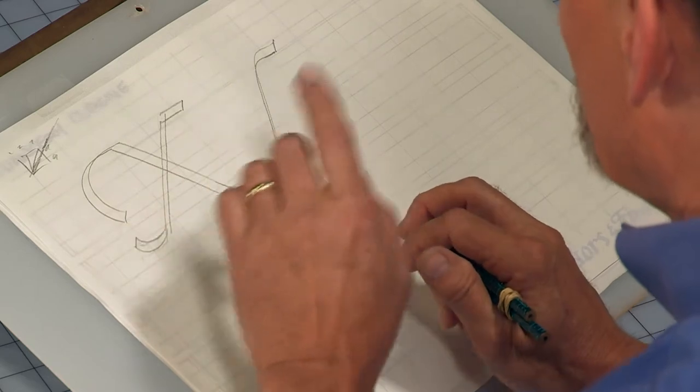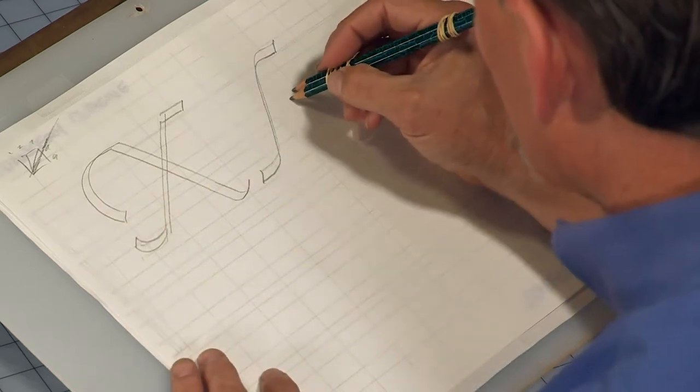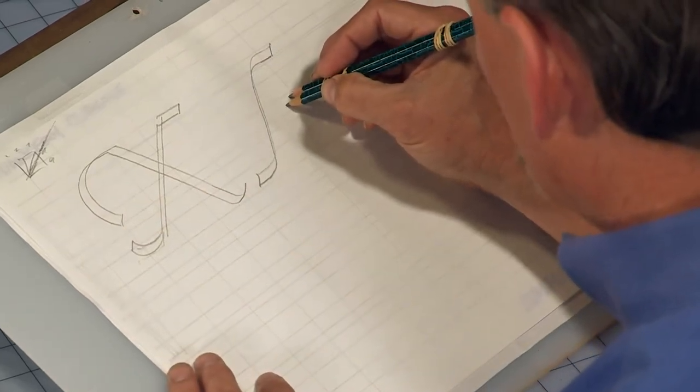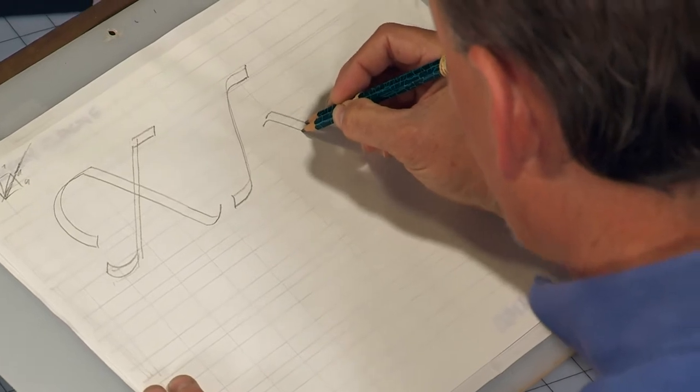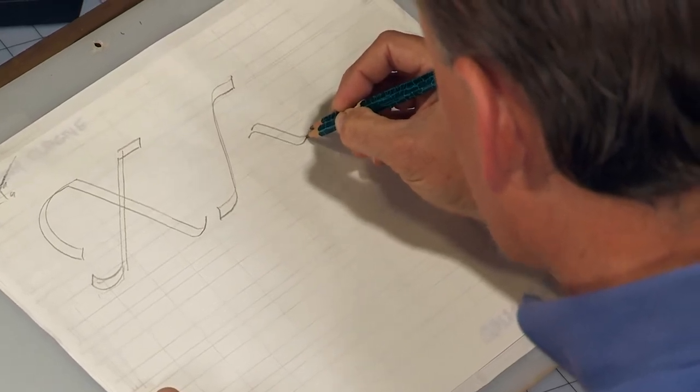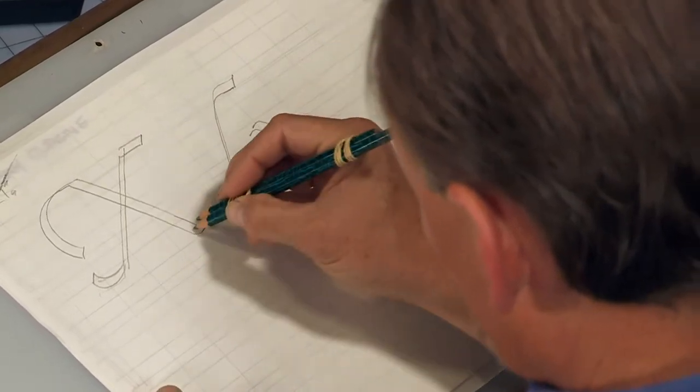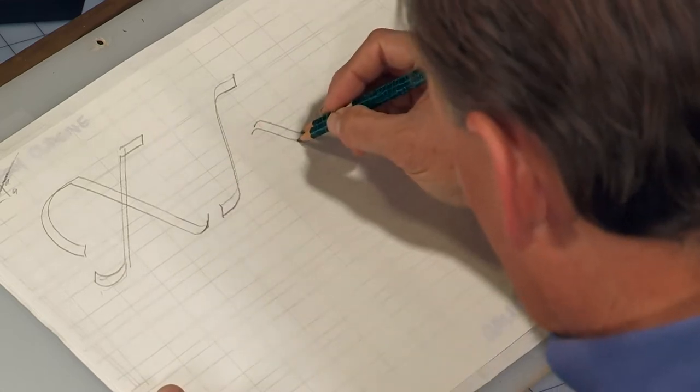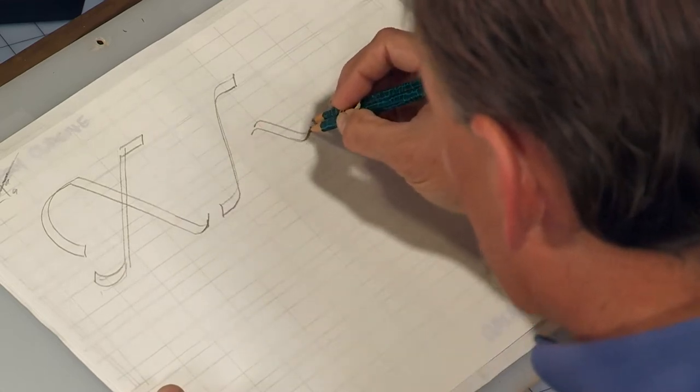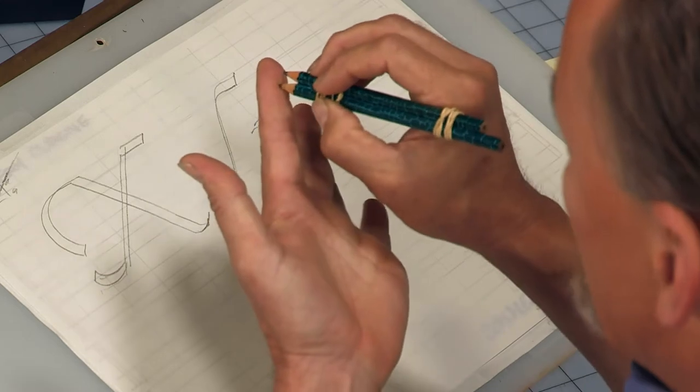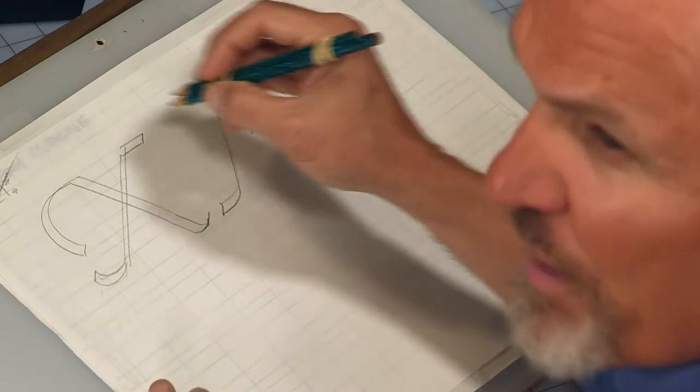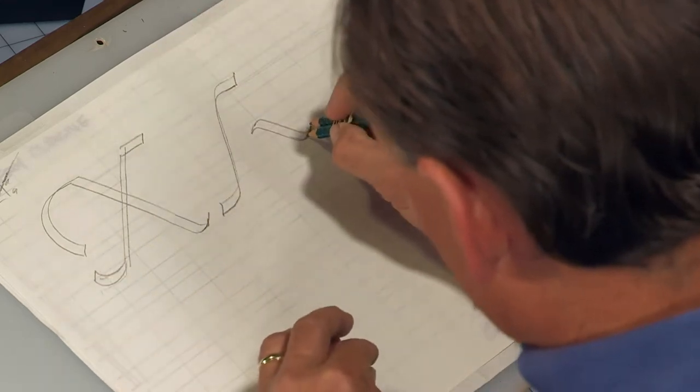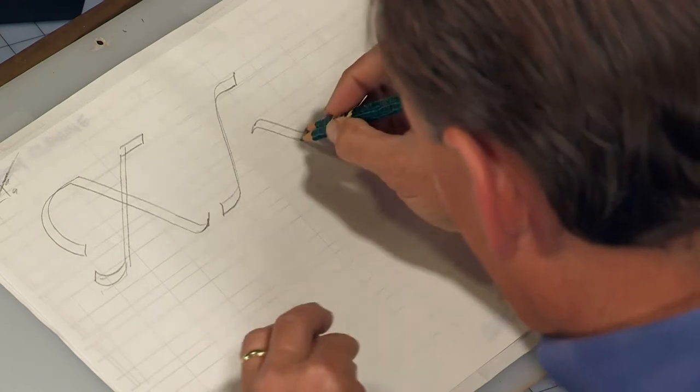Now let's do the lowercase X. Very simple. Starts with a hook, pull down to the baseline, and a little foot hook there. By the way, again, do you notice here and here I pull my pen up so it's just writing on the bottom corner. As I say, I make your pen pop a little wheelie there, so that it goes up on its hind legs.